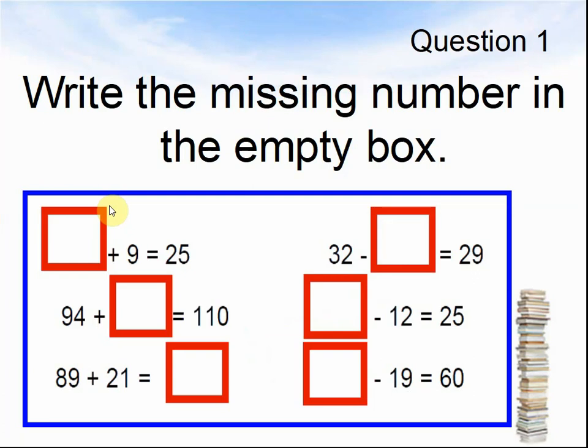Question 1. Write the missing number in the empty box. Something plus 9 equals 25. Something, 32, take away something equals 29. 94 plus something equals 110. Something take away 12 equals 25. 89 plus 21 equals something. And something take away 19 equals 60.